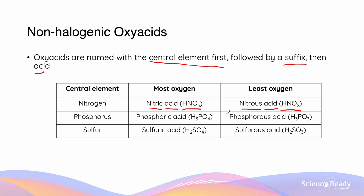The same rule applies for the other types of acids. If we're using phosphorus to create an acid, phosphoric acid is the non-halogenic oxy acid formed by phosphorus which has the most possible amount of oxygen, whereas phosphorous acid is the acid formed with phosphorus which contains the least amount of oxygen possible. The same goes for sulfuric acid and sulfurous acid.